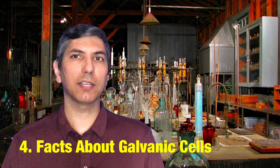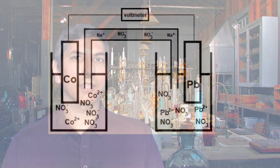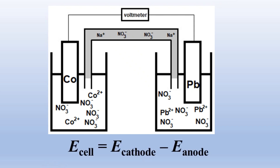Number four: facts about a galvanic cell. At some point on the AP Chem exam, you're going to see a diagram of a galvanic cell and it will probably look something like this. In order to determine what's happening and where it's happening, you need to know some key facts about galvanic cells. Usually they give you just enough information to fill in the missing pieces and solve the puzzle. To determine the voltage or potential difference, you're given the equation E cell equals E cathode minus E anode. Knowing any two of the total voltage and the two standard reduction potentials lets you figure out the other one. But the rest of the facts you have to know.